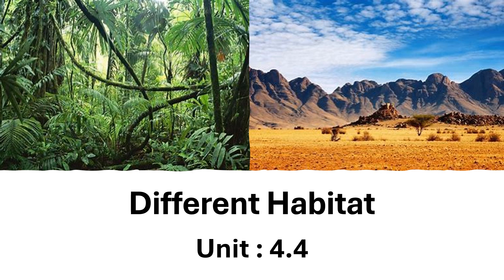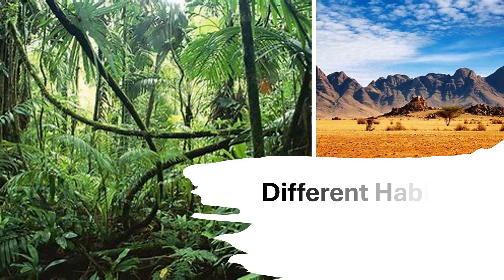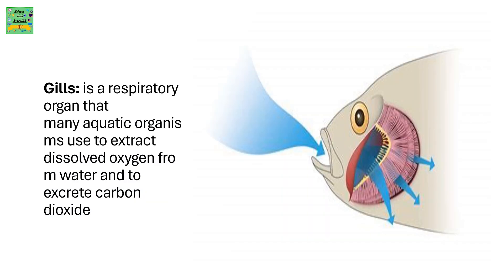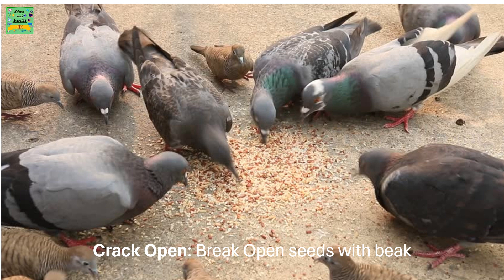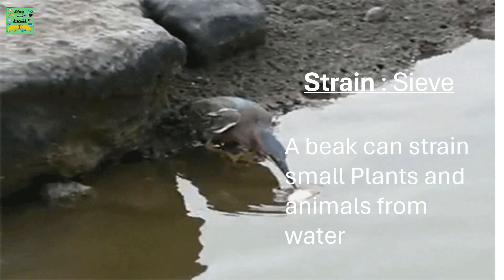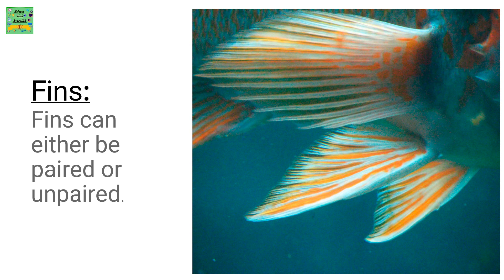Different Habitat, Unit 4.4. Vocabulary: Beak — the beak is an external anatomical structure found mostly in birds. Gills — a respiratory organ that many aquatic organisms use to extract dissolved oxygen from water and to excrete carbon dioxide. Strain — a beak can strain small plants and animals from water. Fins — fins can either be paired or unpaired.